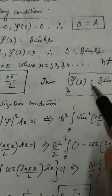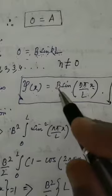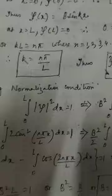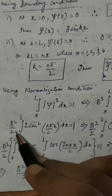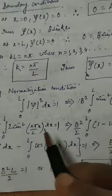So the integral of |ψ|² dx from 0 to L equals 1. Now |ψ|² is ψ* ψ. Since ψ is not a complex quantity but a real quantity, ψ* is also the same. Taking the square, we have B² sin²(nπx/L) dx equal to 1. I have multiplied and divided by 2, so we have B²/2 times 2sin²(nπx/L) dx equal to 1.